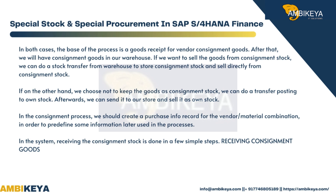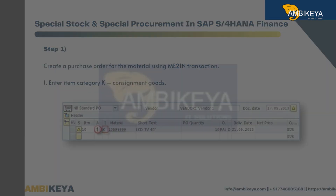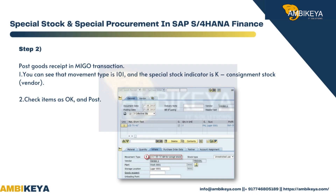Step 1: Create a purchase order for the material using ME21N transaction and enter item category K for consignment goods. Step 2: Post goods receipt in MEGO transaction. You can see that movement type is 101 and the special stock indicator is K for consignment stock vendor. Check that items are OK and post.